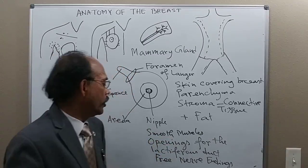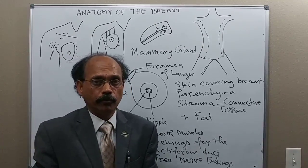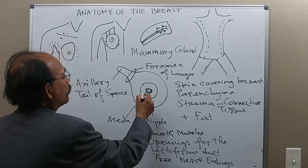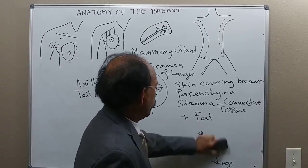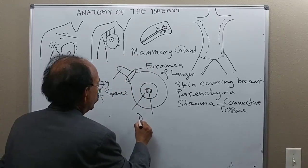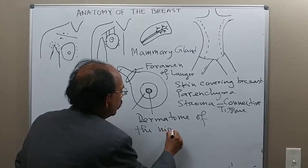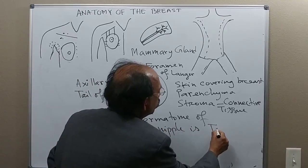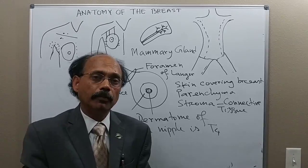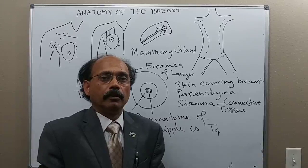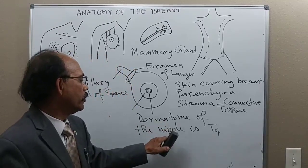The nipple contains smooth muscle, openings for the lactiferous ducts, and free nerve endings. The nipple area does not contain fat and does not contain sweat glands. The dermatome of the nipple and surrounding areola is T4. The dermatome is defined by a particular segment of the spinal cord supplying sensory innervation.